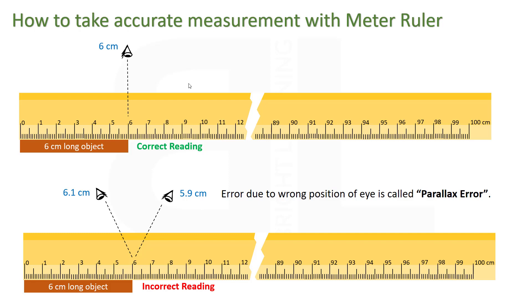So in order to measure the correct length of an object, you should keep your eye just vertically at the meter ruler.